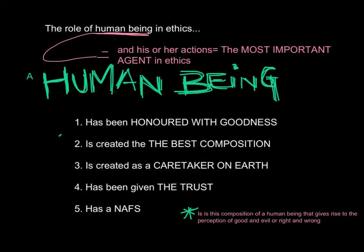A human being has been honoured with goodness — we are created with the innate capability to recognise goodness and virtue, that is, what is right. A human being is created in the best composition, with the capacity to excel in our humanity. The Quran says that only those who believe and do good deeds will realise this potential. A human being is created as a caretaker on the earth, charged with the duty of upholding goodness and righteousness — to do good things not only for ourselves, but for others. Human beings have been given the trust, which is self-awareness and freedom of choice, the ability to reason and to be capable of recognising goodness and choosing it. The human being also has nafs, which is the egotistical soul that acts as the interface between the spirit and the physical body. All human evil is a product of the unpurified nafs.